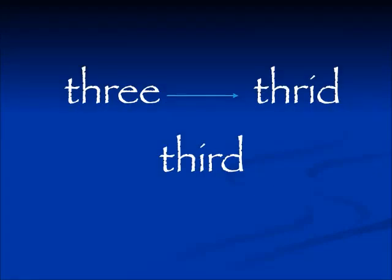An example in English is the word 'three.' When we talk about the thing that comes after the second thing, we don't say 'the thread thing.' The I and the R change places and we say 'the third thing,' which is easier to pronounce.